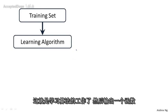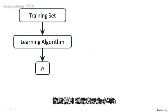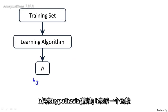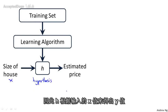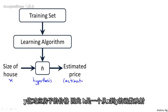It's the job of a learning algorithm to then output a function, which by convention is usually denoted lowercase h, and h stands for hypothesis. The job of the hypothesis is a function that takes as input the size of a house — like maybe the size of a new house your friend is trying to sell — and it tries to output the estimated value of y for the corresponding house. So h is a function that maps from x's to y's.